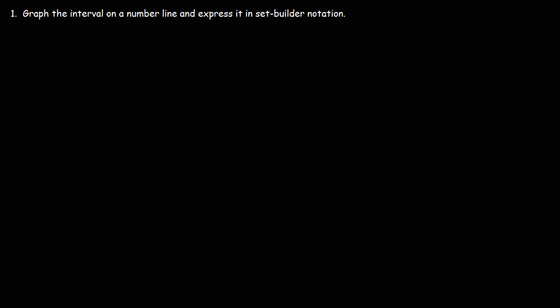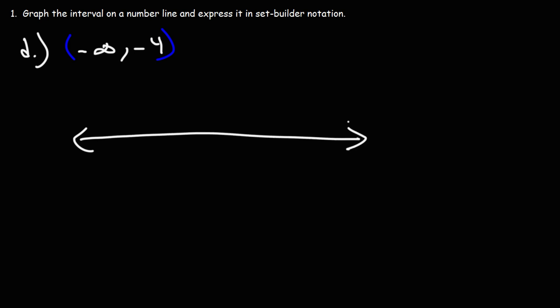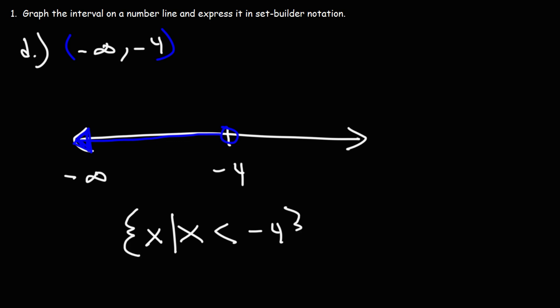Let's work on some more examples. Let's say we have the interval from negative infinity to negative 4 within parentheses. Go ahead and graph it on a number line and express that interval in set builder notation. So we have negative infinity to the left and we're going to stop at negative 4. We have an open circle at negative 4, and we're going to shade towards negative infinity. Thus, we can say that x is less than but not equal to negative 4. That's how we can express it in set builder notation — this is the final answer.